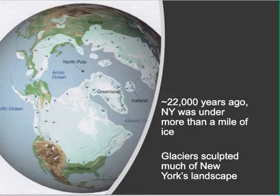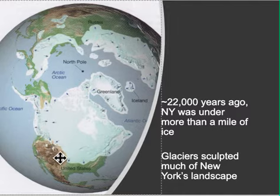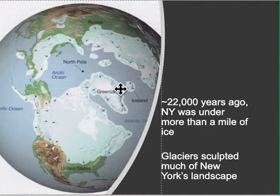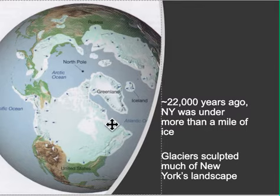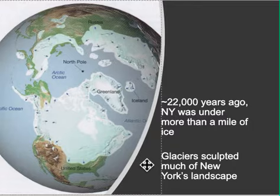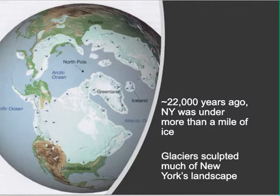Here's a picture showing the extent of the last ice age, in which ice sheets came down from the poles. They covered most of North America, all of Canada, Greenland, Iceland, and most of Northern Europe and Asia. The ice was very thick here in New York — we were under a mile of ice in many locations, and much of our landscape in New York today was shaped by those glaciers.